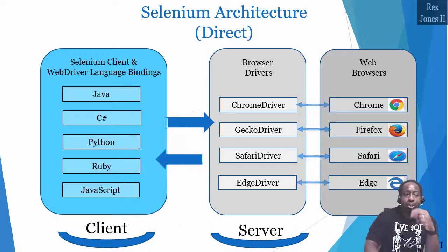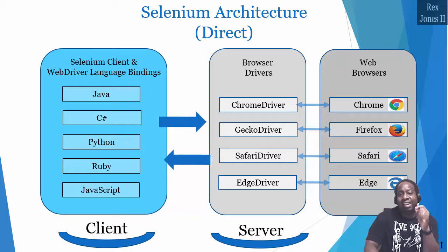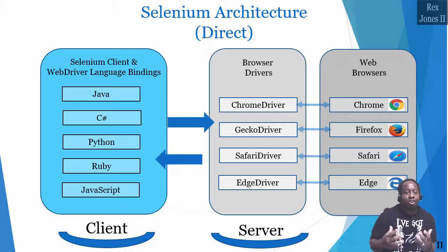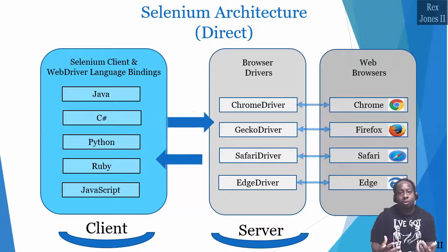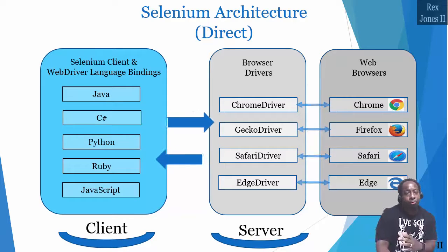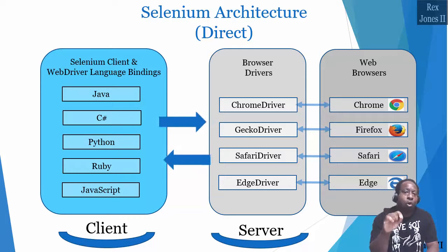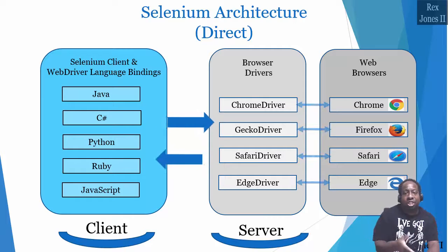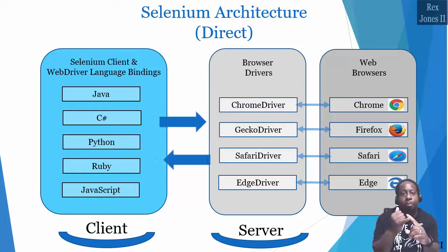The first component has two parts combined into one: Selenium Client and WebDriver Language Bindings. Selenium is an API that has commands for automating our browser. WebDriver has only one job and that job is to talk to the browser through a driver. Each language has their own bindings. Bindings mean the same commands written for Java are also written for C#, Python, Ruby, and JavaScript.